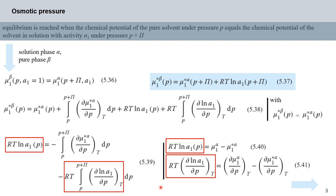Now remember the equations we derived for the chemical potential from the characteristic functions and the relationships for the first differentials, stated in equations 540 and 541 — refer back to your notes if you don't quite remember those. We can substitute these into equation 539, which we'll do on the next slide.